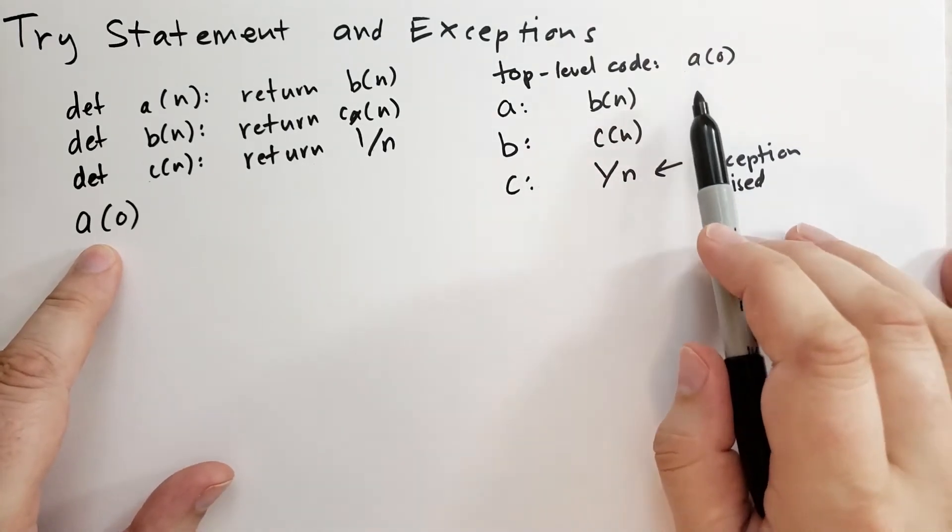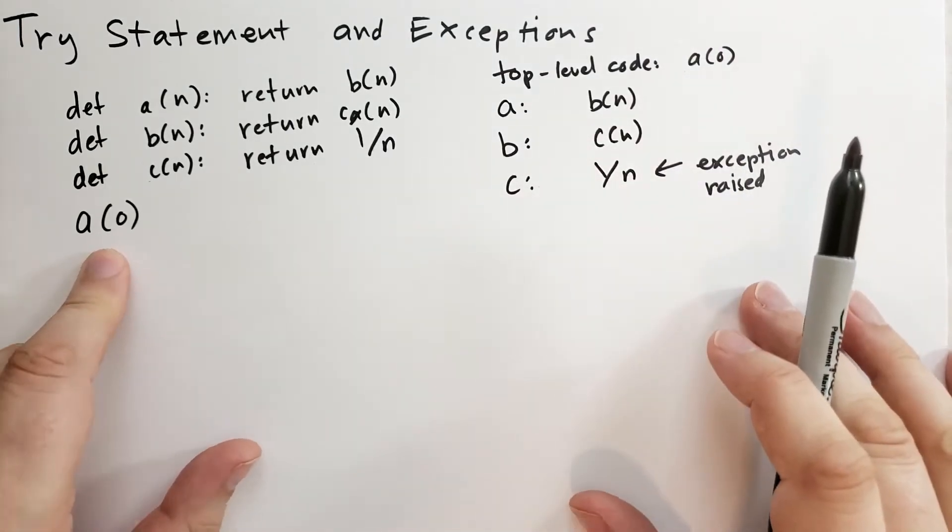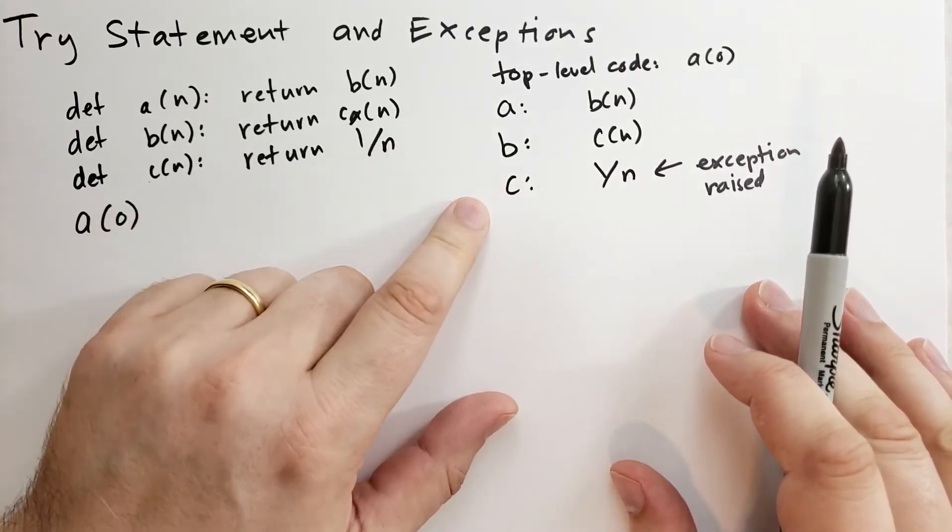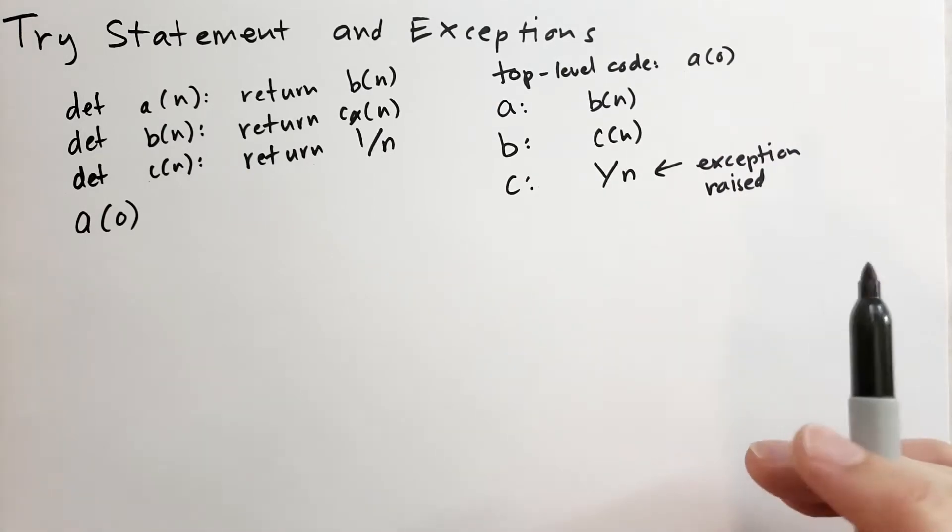And so the top-level code will get the exception and then pass it up to the Python interpreter. And the Python interpreter will print for you on the console a nice error message explaining what happened. I encourage you to run this code and see what happens and get to understand what the stack trace and what the exception means.